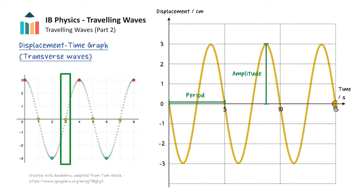We can recall the relation that relates the period to the frequency, so the frequency of the wave can also be determined from this graph. However, we can't use it to find wavelength, because we are looking at a single point in the wave.